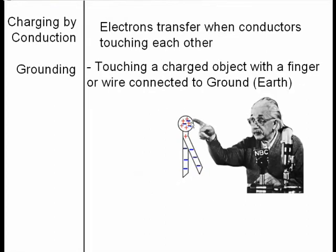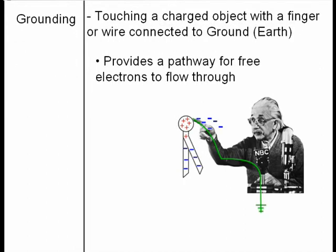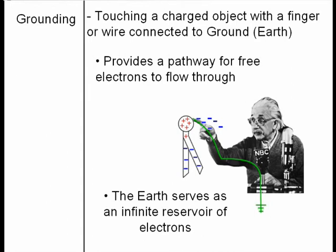Grounding the object is going to draw off the extra electrons. When you're grounding something, you're touching it to the Earth. And the Earth provides a pathway for the electrons to flow through. The Earth serves as an infinite reservoir of electrons. So they can flow to the Earth and not change the charge of the Earth or vice versa.